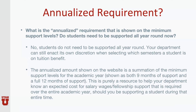Annualized requirement: what is the annualized requirement shown on the minimum support levels? Do students need to be supported all year round now? No, students do not need to be supported year round. Your department can still enact at its own discretion when selecting which semester the student is on tuition benefit. The tuition benefit program will continue to function each semester rather than by each year. The annualized amount shown on the website is a summation of the minimum support levels for the academic year, shown as both 9 months of support and a full 12 months of support, purely as a resource to help your department know an expected cost for salary, wages, and fellowship support required over the entire academic year, should you choose to support a student during that entire time.